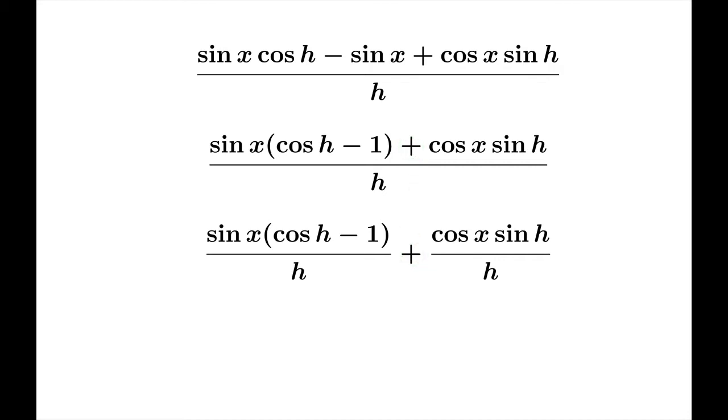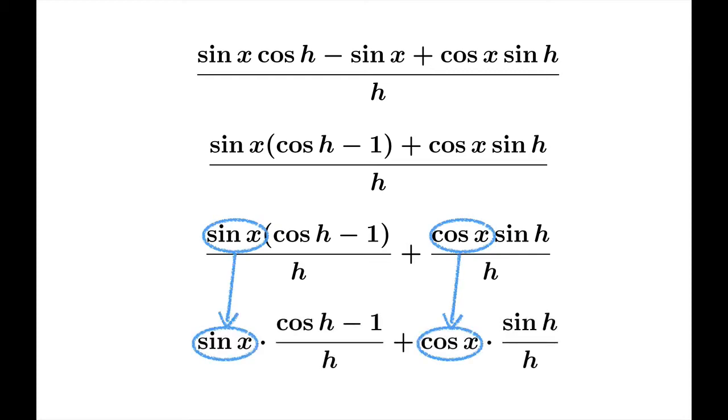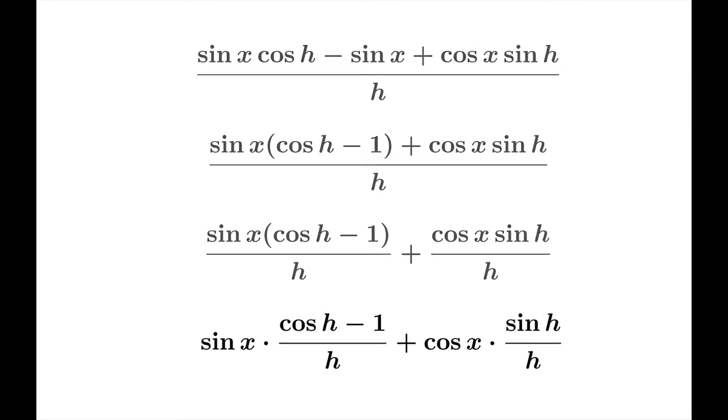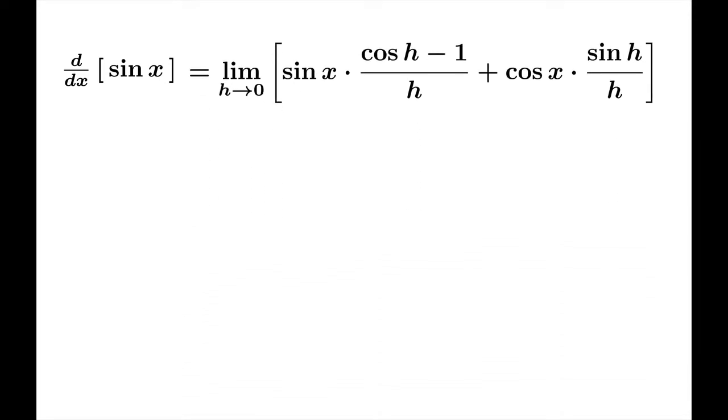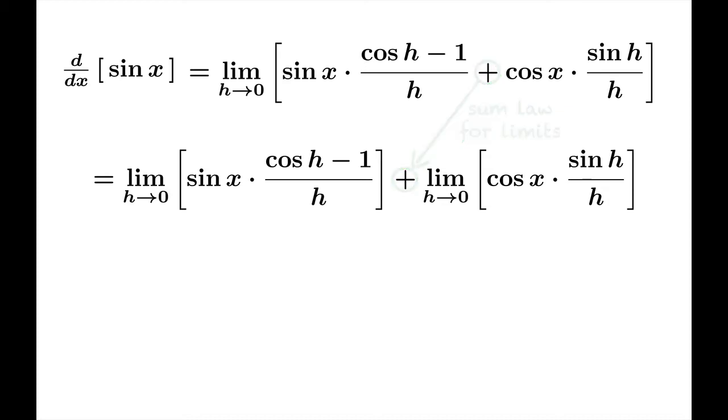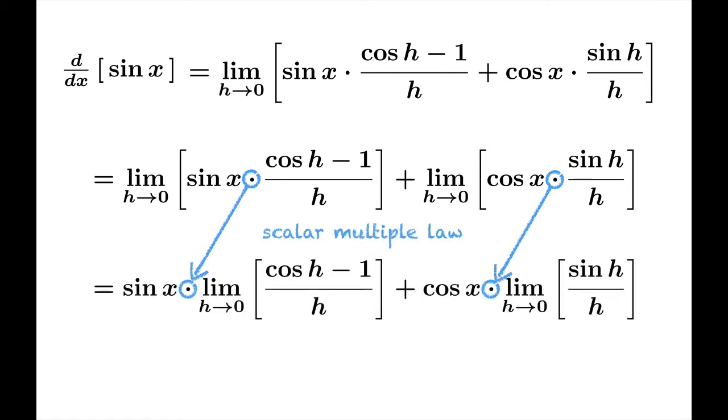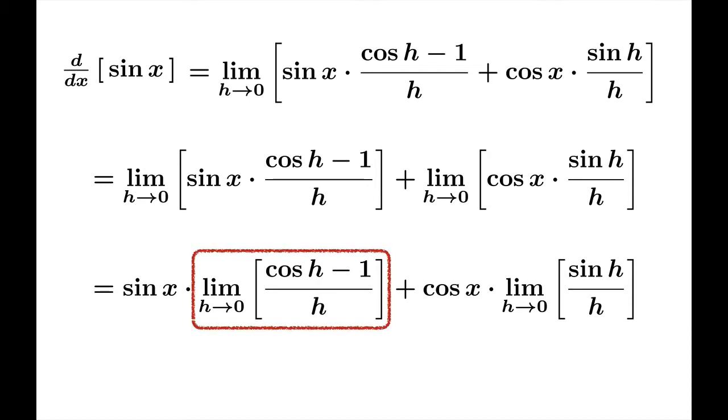When we apply the limit, we'll be looking as h goes to zero. X doesn't change through the limiting process, so we can treat sine x and cosine x as constants. We're going to pull these off to the sides of these two expressions. Now let's put this expression back into the limiting process. We can apply the limit law for sums and the scalar multiple laws to pull out the factors of sine x and cosine x. We know that this limit is zero and this limit is one. When all the dust settles, we find that the derivative of sine x is just cosine x.